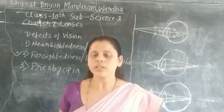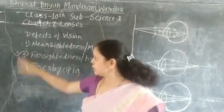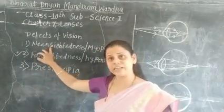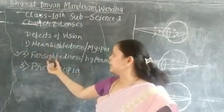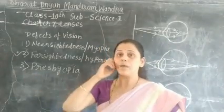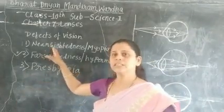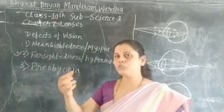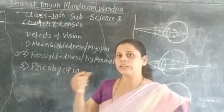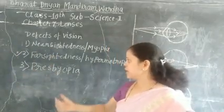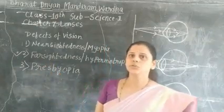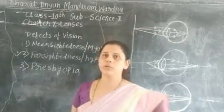So there are three defects of vision in total: nearsightedness, farsightedness, and presbyopia. For nearsightedness, people use a concave lens; for farsightedness, people use a convex lens; and for presbyopia, they use a bifocal lens. In nearsightedness people can see near objects clearly, in farsightedness they can see distant objects clearly, and presbyopia involves having both defects. I hope you understood today's lecture — if you have any query, you can message me.